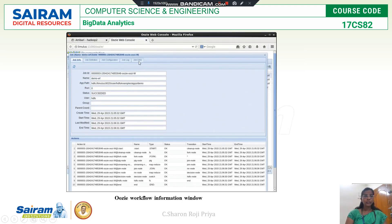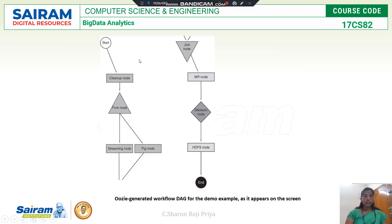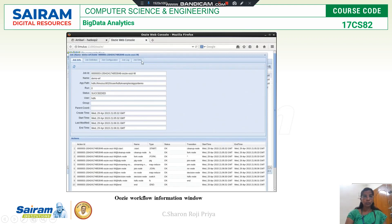In the main console window, if you click the job DAG, you'll get the directed acyclic graph for your job. The DAG shows the workflow: start, cleanup node, fork node with multiple parallel executions, join node, decision node, and end. That is how you can view the directed acyclic graph of the running job.